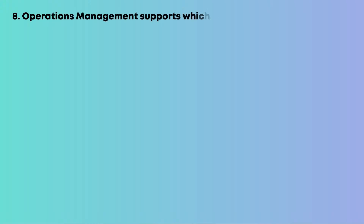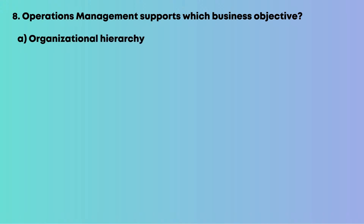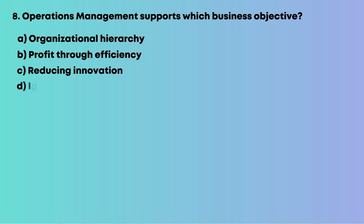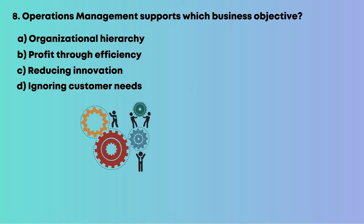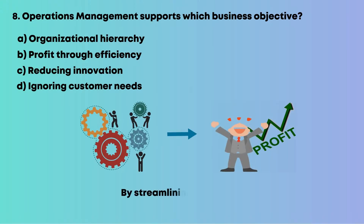Question 8: Operations management supports which business objective? Options are: A, organizational hierarchy; B, profit through efficiency; C, reducing innovation; D, ignoring customer needs. Operations management boosts profitability by streamlining operations. The answer is B, profit through efficiency.